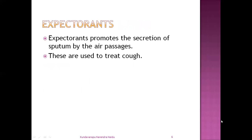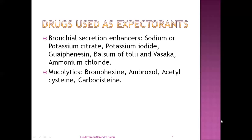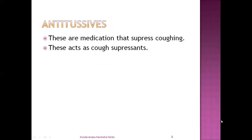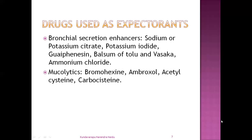And next: expectorants. Expectorants are drugs which promote the secretion of sputum by the air passages. These are mainly used to treat cough — we use expectorants for treating cough by promoting the secretion of sputum in air passages. The drugs used as expectorants are mainly bronchial secretion enhancers, which increase bronchial secretion. They are sodium or potassium citrate, potassium iodide, glycerine, balsam of tolu, balsam of vasaka, and ammonium chloride.